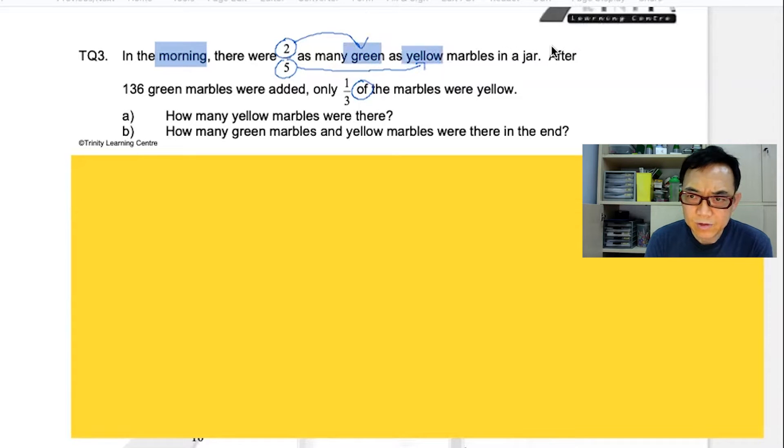Then it says after. Remember after is always a keyword. Because it tells you the difference between the start and the end. 136 green marbles were added. When that happens,